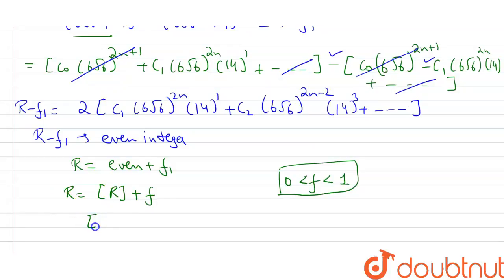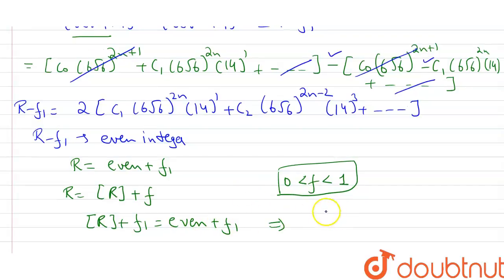From this we can say that [R] + f₁ equals even + f₁. This implies that [R] is equal to even. It is an even integer.